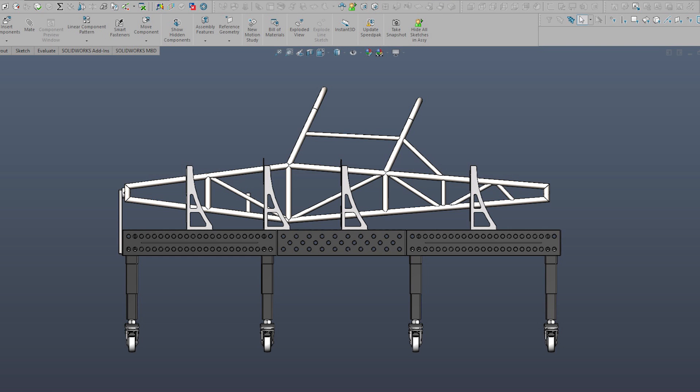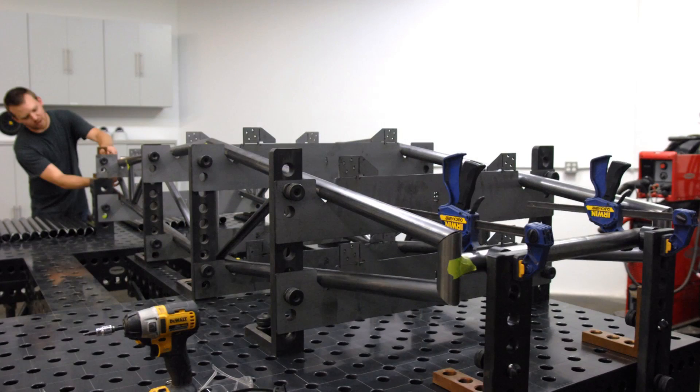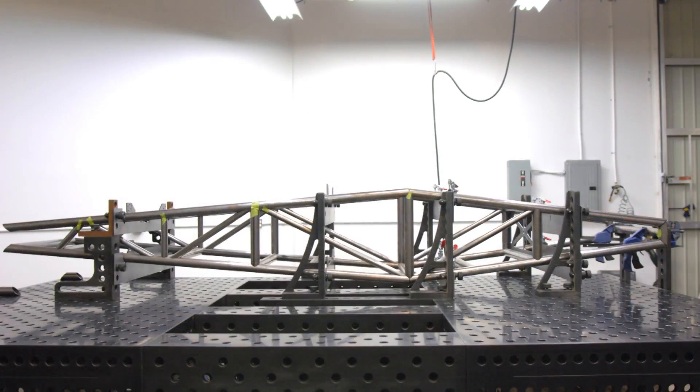Then we moved back in 500 millimeter increments with these squares to establish a bulkhead. Our front of our chassis would be here, 500 millimeters back we'd have our first bulkhead, another 500 millimeters back we'd have the next bulkhead, and so on, throughout the whole chassis.